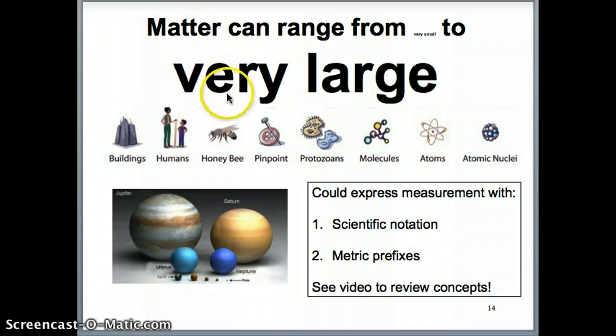So in chemistry, as well as in other subjects in the sciences, we study many different things. And specifically in chemistry, we study matter, which is something that has mass and has some velocity. Now, it turns out that matter can range from something that's really small, like atomic nuclei,